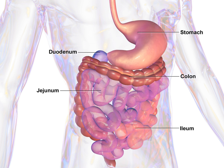The time taken for food or other ingested objects to transit through the gastrointestinal tract varies depending on many factors, but roughly it takes less than an hour after a meal for 50% of stomach contents to empty into the intestines, while total emptying takes around 2 hours. Subsequently, 50% emptying of the small intestine takes between 1 and 2 hours. Finally, transit through the colon takes 12 to 50 hours with wide variation between individuals.